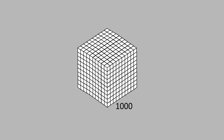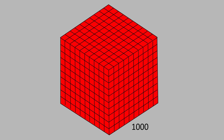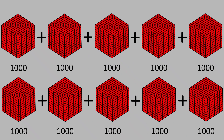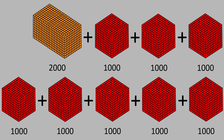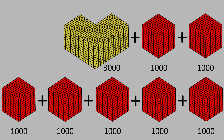Excellent, Power Kids! This is next level. Now, let's add 1,000 ten times. 1,000 plus 1,000 is equal to 2,000. 2,000 plus 1,000 is equal to 3,000.